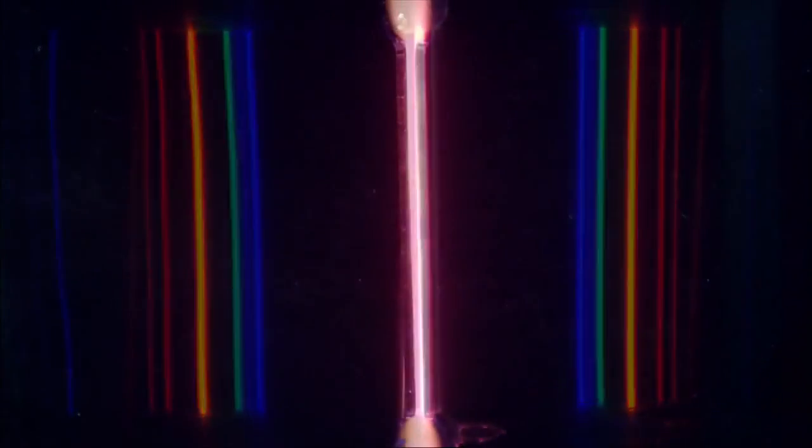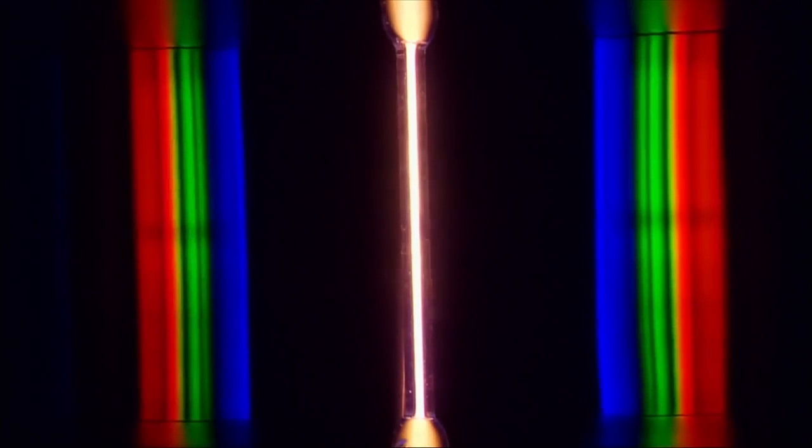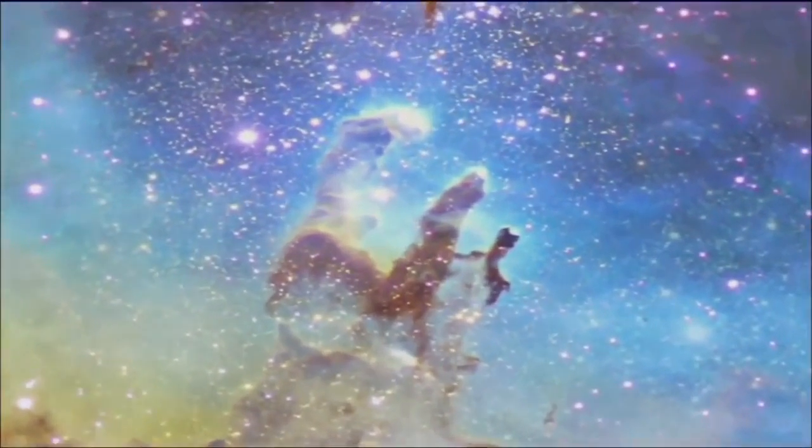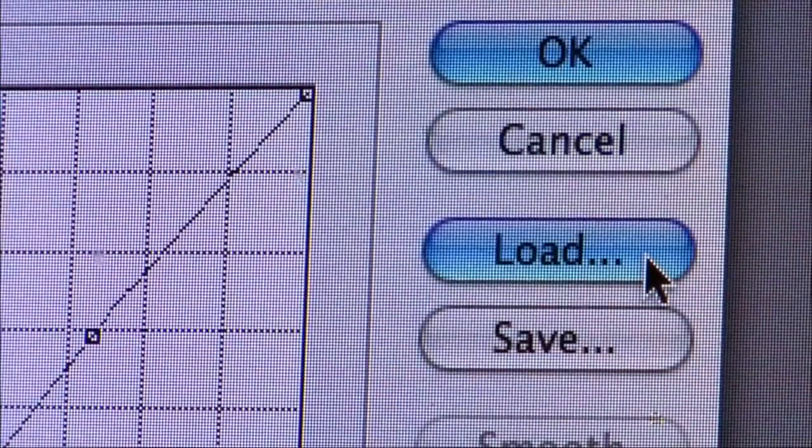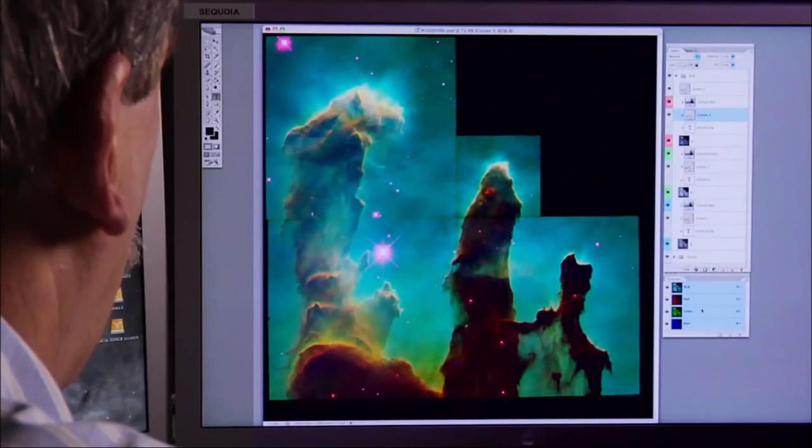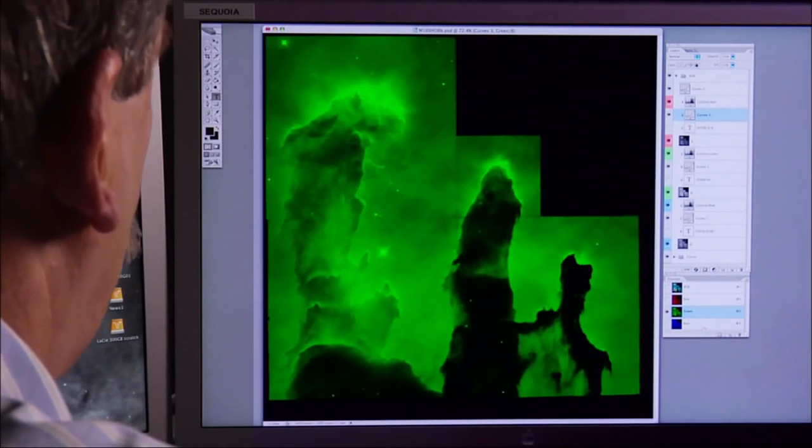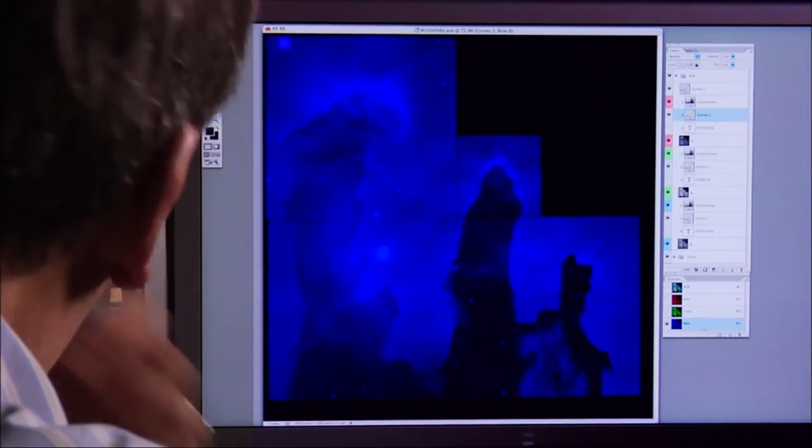Isolating the individual spectral lines of the elements within nebulas has allowed astronomers to create images truly worthy of these tourist attractions of our galaxy. By using what are called narrowband filters corresponding to single lines, astronomers have given us another way of seeing things we can't see by ourselves.